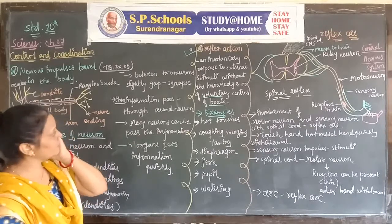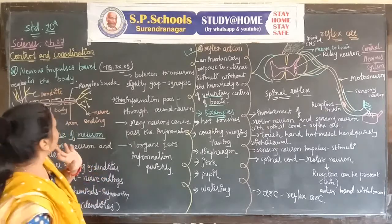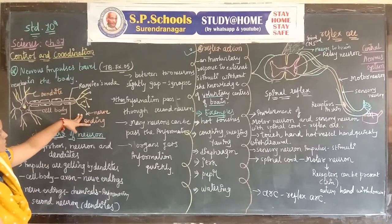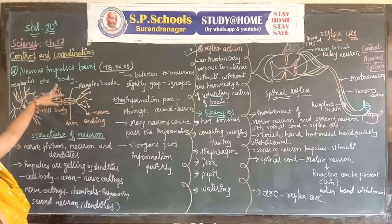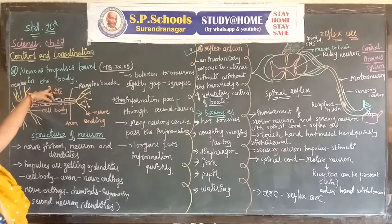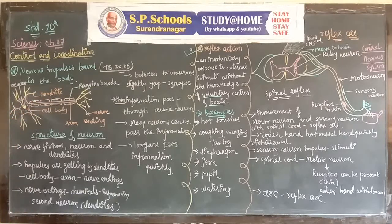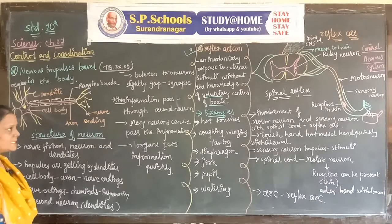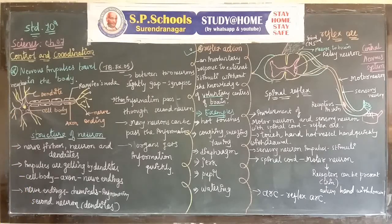Write a short note on reflex action or write a short note on spinal reflex. The reflex arc is controlled by the spinal cord. One most important question is also textbook question number five: draw the structure of a neuron and how nerve impulses travel in the body, what is reflex action, give its examples, and draw the diagram. First explain the spinal reflex, then explain the reflex arc — it is connected and happens by the spinal reflex.